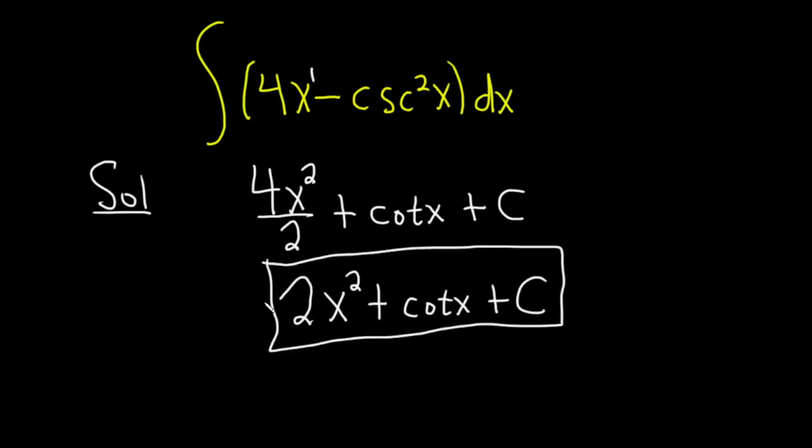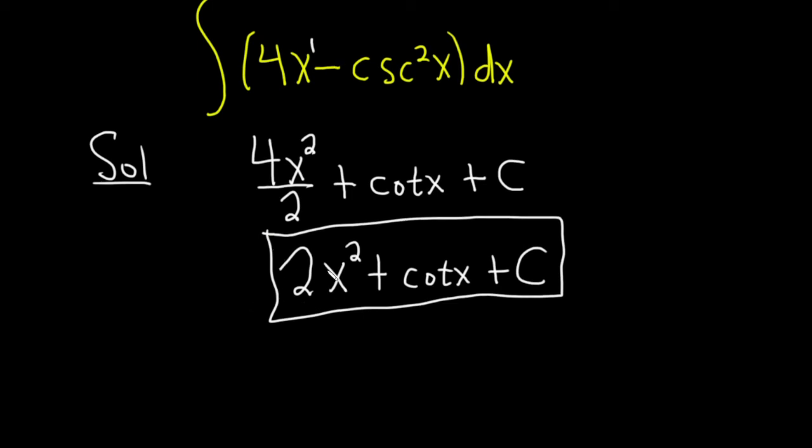Let's go ahead and check our work by differentiating this. We take the derivative here using the power rule. 2 times 2 is 4, and we subtract 1 from the exponent. So we just get 4x to the first power, which is the same thing as 4x. The derivative of cotangent is negative cosecant squared x. And the derivative of c is 0. This is exactly what we have in the integrand in the original problem. So all is good.